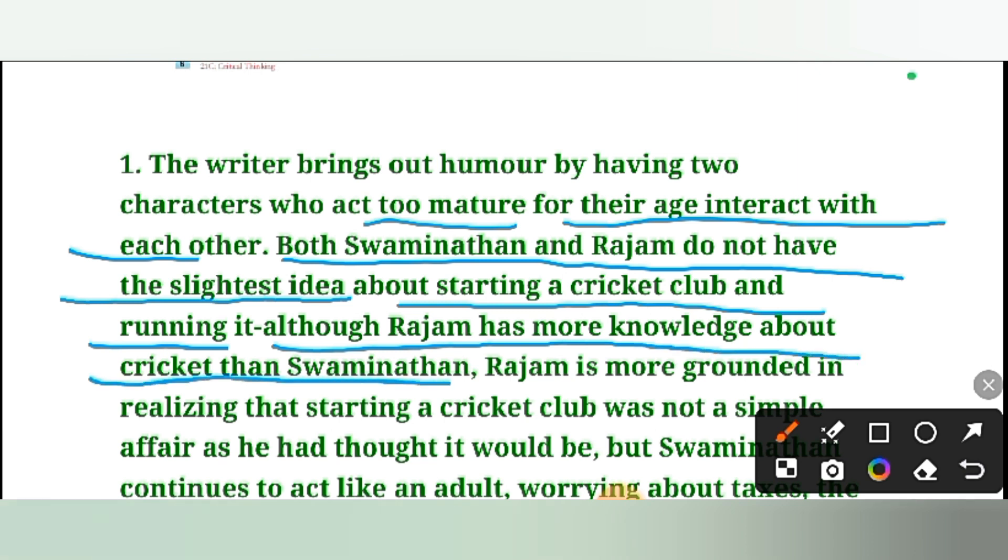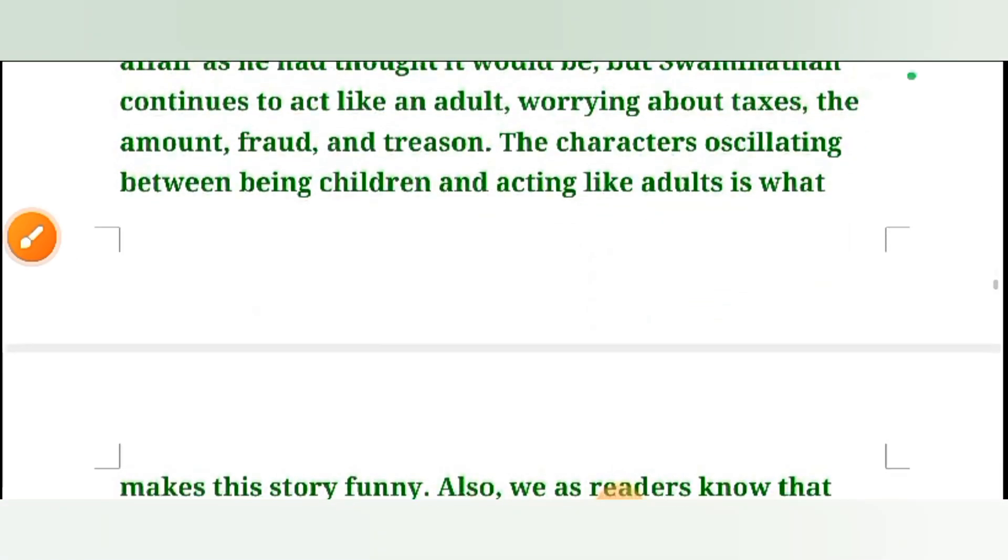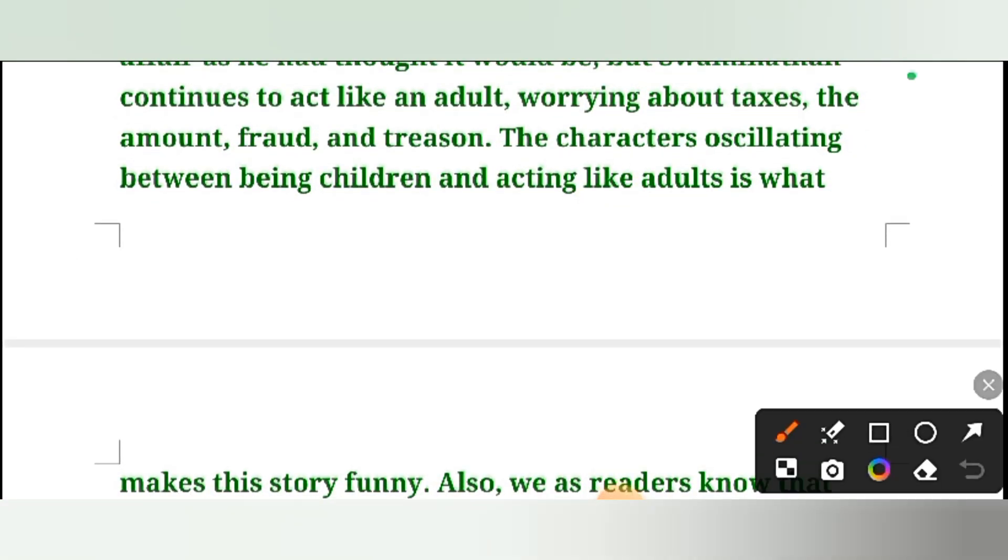Rajam is more grounded in realizing that starting a cricket club was not a simple affair as he had thought it would be. But Swaminathan continues to act like an adult, worrying about taxes and amount of fraud and tradition.